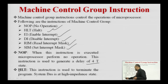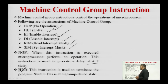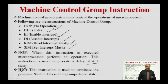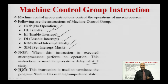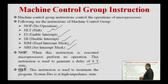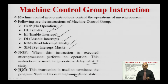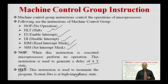Next is the HLT instruction. This instruction is used to terminate the program. Whenever the microprocessor executes the HLT instruction, it terminates the program and the system bus is placed at the high-impedance (tri-state) state.